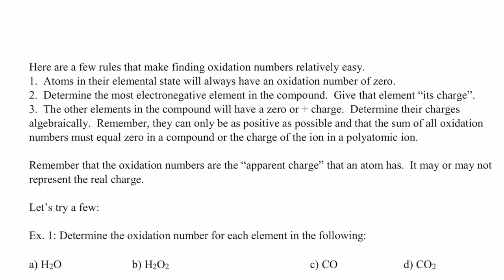Welcome back. We're continuing our discussion of oxidation and reduction. We ended the last video with an introduction to oxidation numbers. For ionic compounds, finding oxidation numbers is pretty simple. For instance, in CaCl2 (calcium chloride), calcium loses two electrons to attain a noble gas configuration, giving it a positive two oxidation number, and each chlorine gains one electron, so each has an oxidation number of negative one.